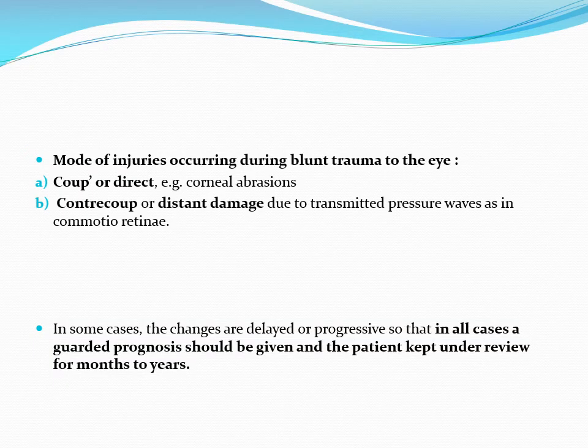In blunt trauma to the eye, there are two mechanisms. One is coup or direct, and secondly counter-coup or distant damage. In coup or direct, the object comes directly into contact with the globe — for example, corneal abrasion. In counter-coup, the object contacts at one place but damage is done to the distant structures of the eye because of transmitted pressure waves.